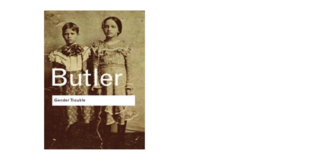Ideas are another matter. What constitutes someone's original idea? An original idea is one that can be attributed to a certain person — it's specific. For example, the idea of gender as a performance must be attributed to Judith Butler, because she came up with this idea in her book, Gender Trouble.